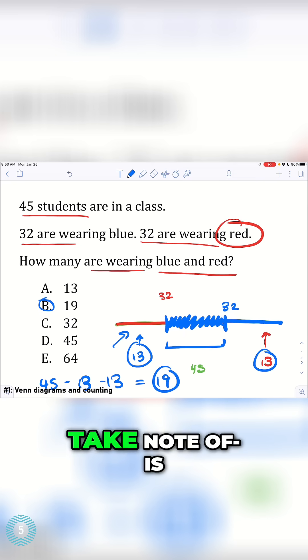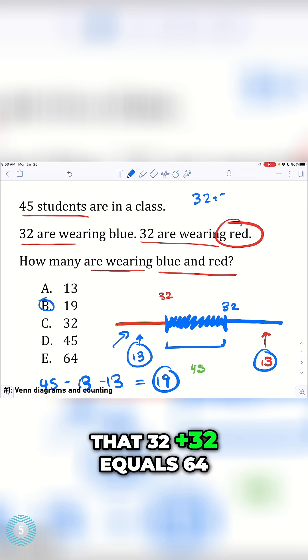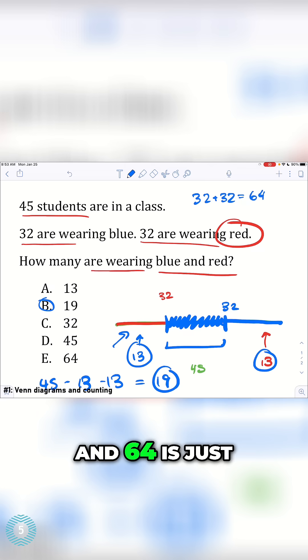Now the other way to solve it, something interesting you can take note of, is that 32 plus 32 equals 64, and 64 is just 45 plus 19.